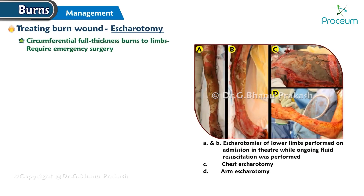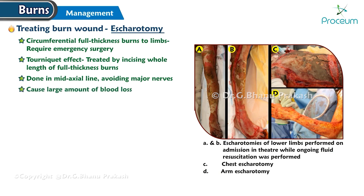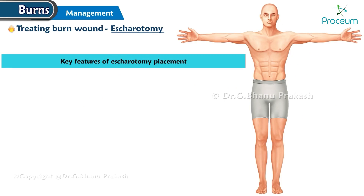Circumferential full thickness burns to the limbs require emergency surgery. The tourniquet effect of this injury is easily treated by incising the whole length of full thickness burns. This should be done in the mid-axial line, avoiding major nerves. One should remember that an escharotomy can cause a large amount of blood loss. Therefore, adequate blood should be available for transfusion if required. Key features of escharotomy placement.